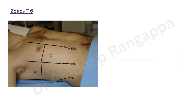For lung ultrasound, we divide the chest into six zones. Zone one and two are at the parasternal line; zones three and four are along the anterior axillary line; and then we go posteriorly along the posterior axillary line — PSL, anterior axillary line, posterior axillary line. We also look at the FLAPS point, which gives us two more zones, for a total of six. These last two zones, beyond the posterior axillary line, are used to look for consolidation and pleural effusion.